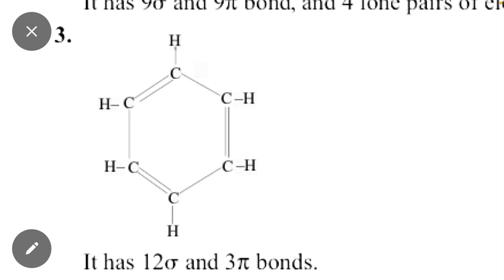Similarly example number 3. Here are 12 sigma bonds and 3 pi bonds. 1, 2, 3 double bonds mean 3 pi bonds. Now we will calculate sigma bonds.